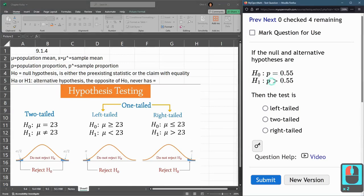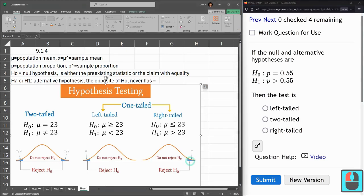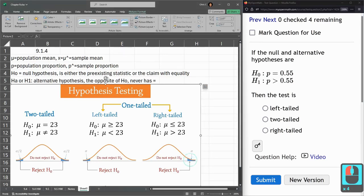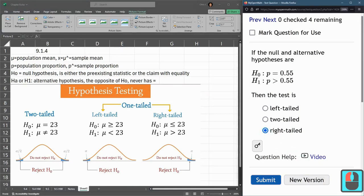And what we're looking at right here is just the alternative, h1. So in this one, p is greater than, so that means we're looking for a large p-value, which is to the right. So this is the situation we have here. We're looking to the right. Right-tailed, submit.